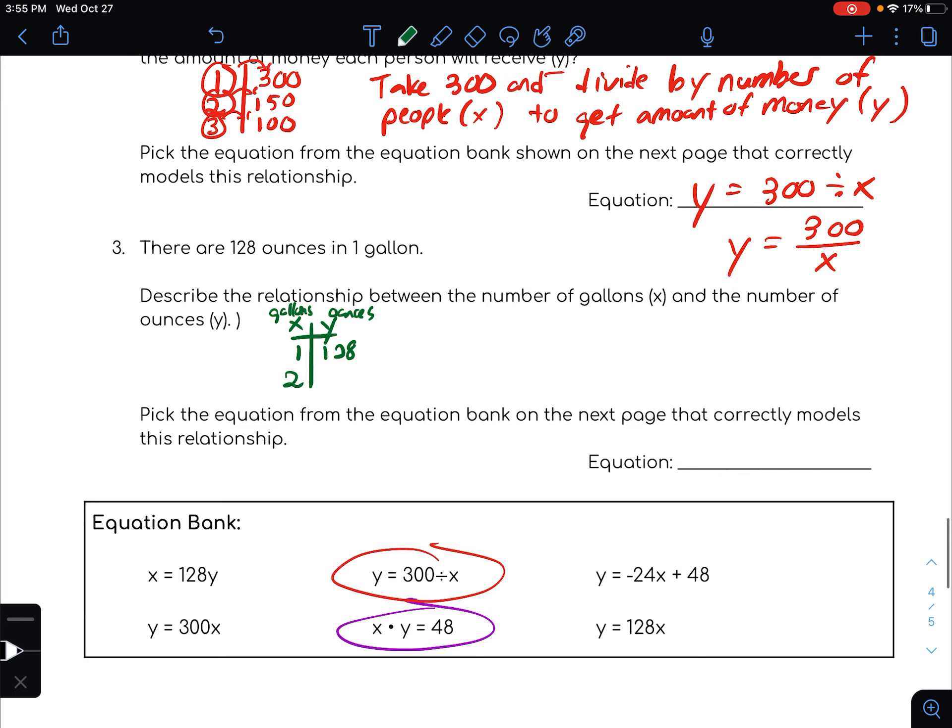If I get three gallons, I'd have to multiply that by three. I think I've got the relationship here, right? Because you're taking x and you're multiplying it by 128 and you get the y. So one times 128 is 128, two times 128 is 256.